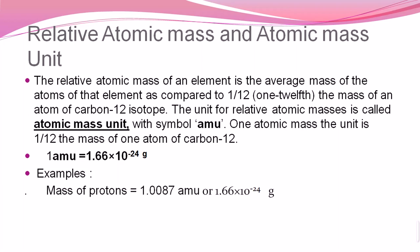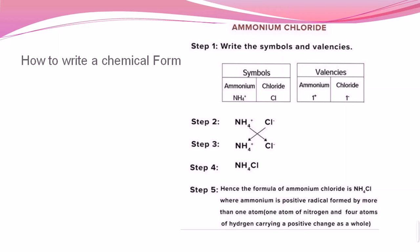For example, the mass of a proton of hydrogen: we know the atomic number of hydrogen is one. Its average atomic mass is 1.0087 AMU. When converting this to the relative atomic mass unit, this equals 1.66 multiplied by 10 to the power of minus 24 grams. This is how we relate the atomic mass of any element relative to carbon-12 as the standard.